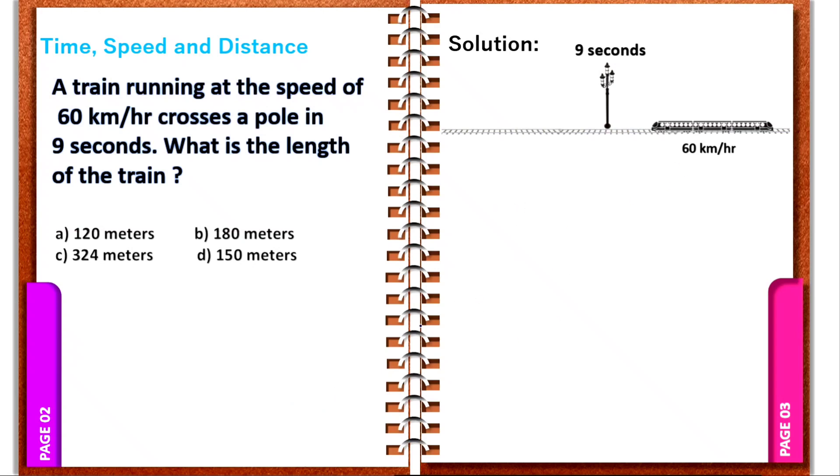Now, we can find the formula from time, speed, and distance. If you choose a triangle, we can find the triangle in 3 parts. In the first part, we can find the first alphabet in time, speed, and distance.